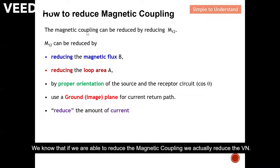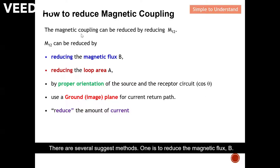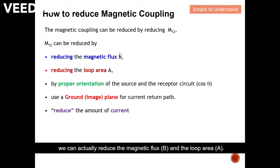How can we reduce the magnetic coupling? We know that if we are able to reduce the magnetic coupling we actually reduce VN. The fundamental question is: how can we reduce the mutual coupling coefficient M12? There are several suggested methods. One is to reduce the magnetic flux B, another is to reduce the loop area A. Later on I will explain how by twisting the wire we can actually reduce both the magnetic flux and the loop area.